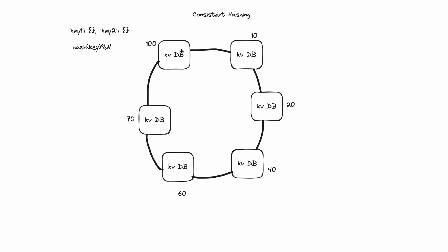In our cluster, all machines are arranged in a ring structure. Each machine holds a range of keys. For example, this one stores keys 0 to 10, this one stores 11 to 20 — meaning whenever the client does a hash of key mod N and the result falls in 0 to 10, the key-value object is stored in that machine. The same applies to all machines: 21 to 40, 41 to 60, 61 to 70, and finally 71 to 100.